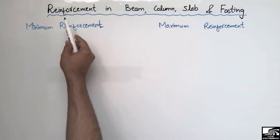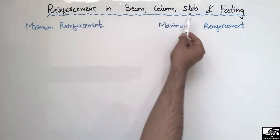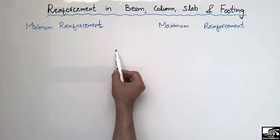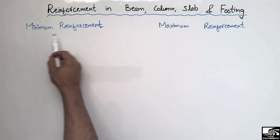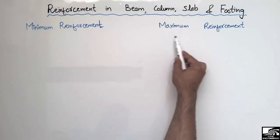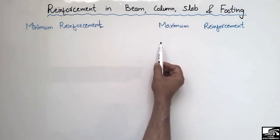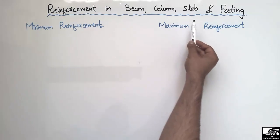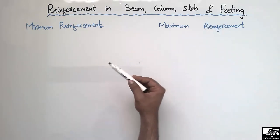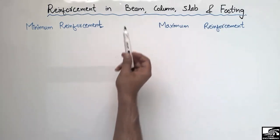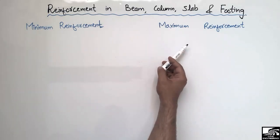Today our lecture is about the reinforcement requirement in beam, column, slab, and footing. In this lecture we are going to discuss what should be the minimum reinforcement requirement and what should be the maximum reinforcement requirement for different structural members such as the beam, column, slab, and footing. The reinforcement provided in these structural members should be in between the minimum and maximum reinforcement.